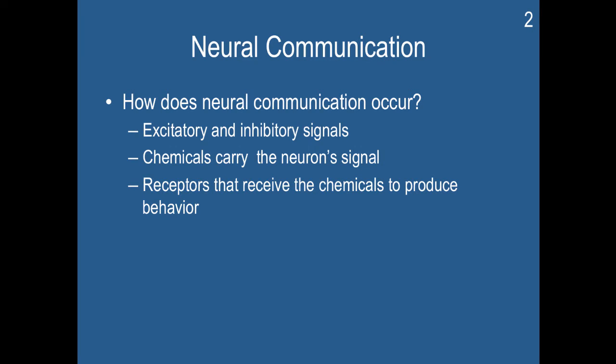Now we're going to begin Chapter 5. In Chapter 5 we're going to be learning more about how neural communication occurs — specifically how neurons are physically able to communicate with each other. We learned in Chapter 4 that there are excitatory and inhibitory signals. In this chapter, you're going to learn how chemicals carry the neuron signal and are used to transmit messages, and how receptors receive those chemicals to produce behavior. These are the fundamental elements of how neural communication occurs.